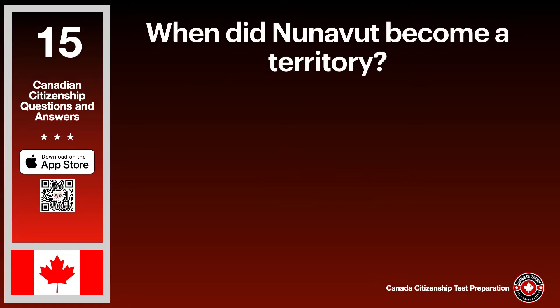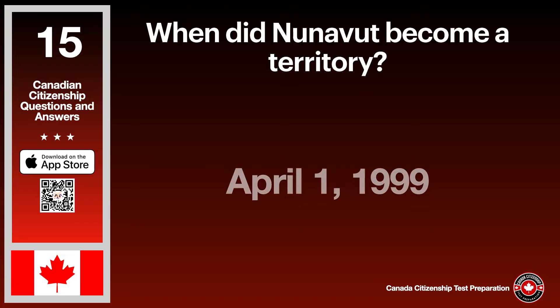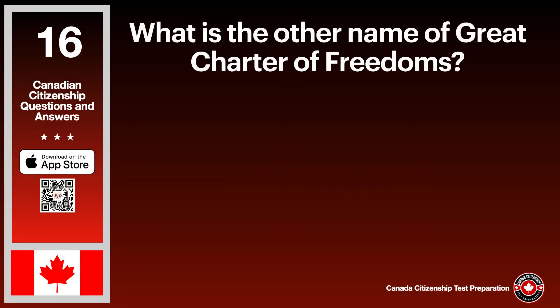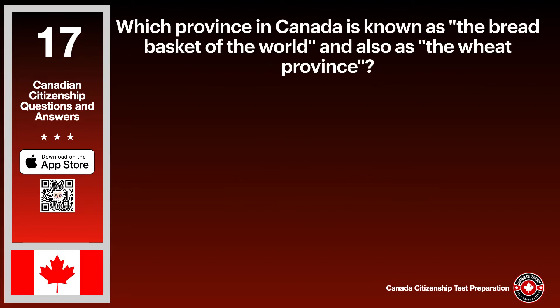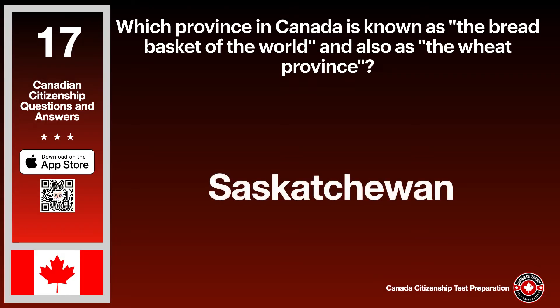When did Nunavut become a territory? The answer is April 1st, 1999. What is the other name of the Great Charter of Freedoms? The answer is Magna Carta. Which province in Canada is known as the bread-basket of the world and also the wheat province? The answer is Saskatchewan.